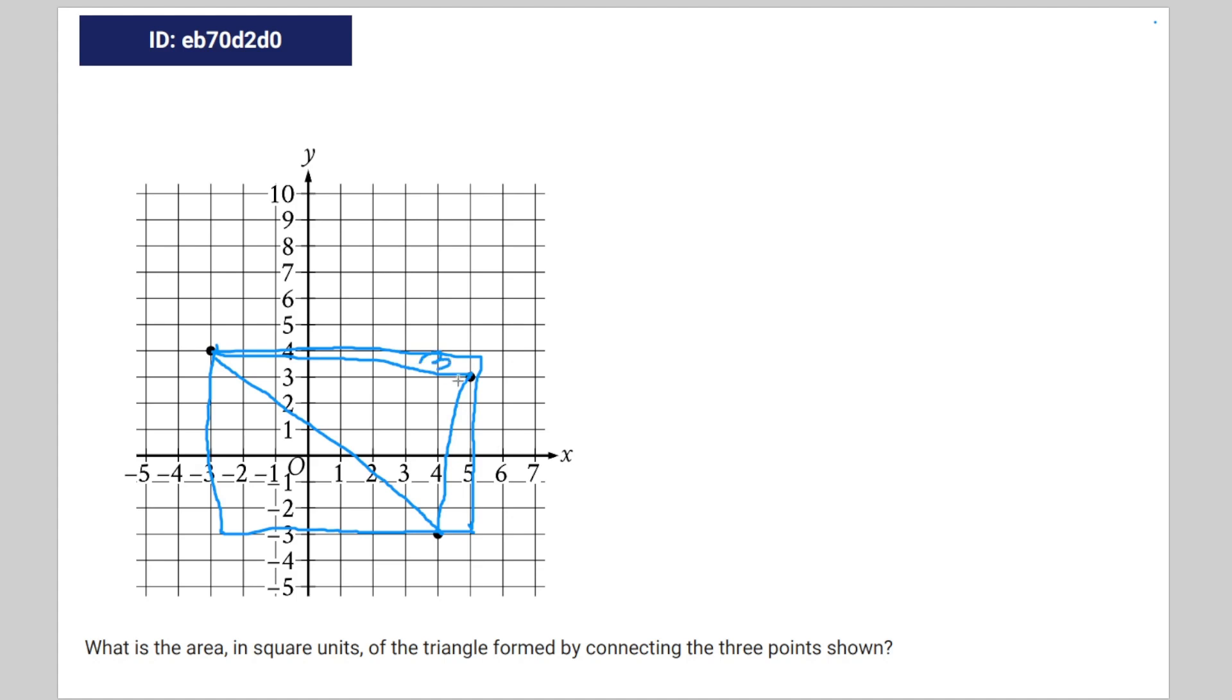You'll be left with three different triangles. We have to figure out the area for these triangles and then subtract that from the rectangle as a whole. What's left over is the area of this triangle inside.